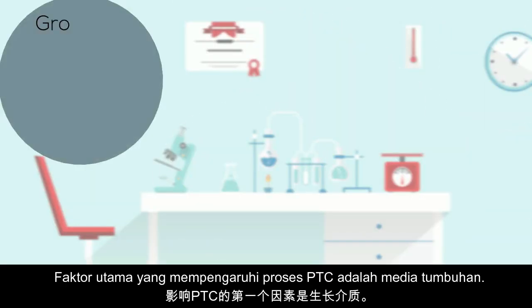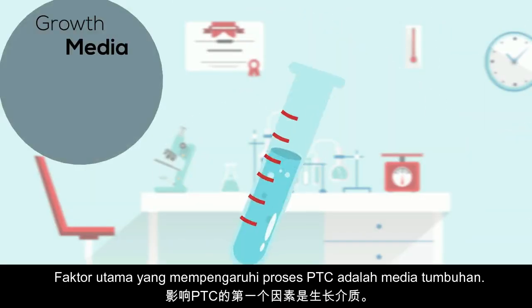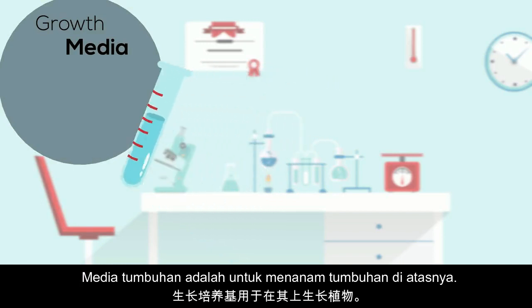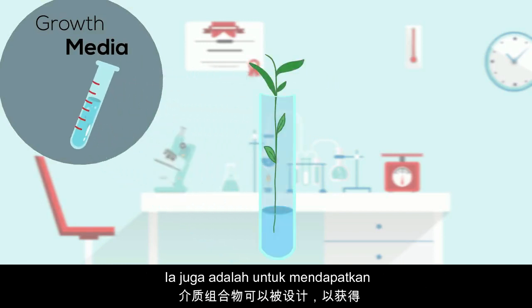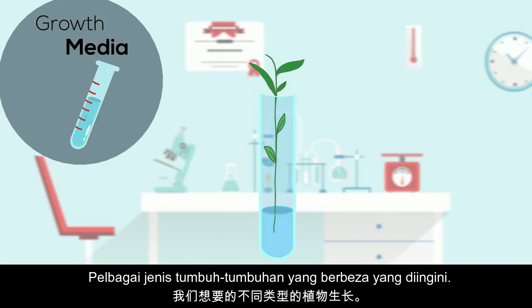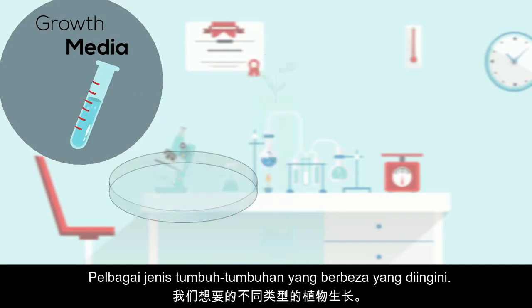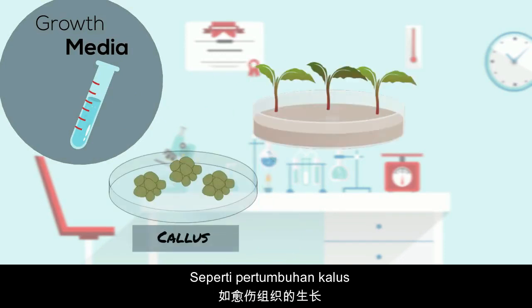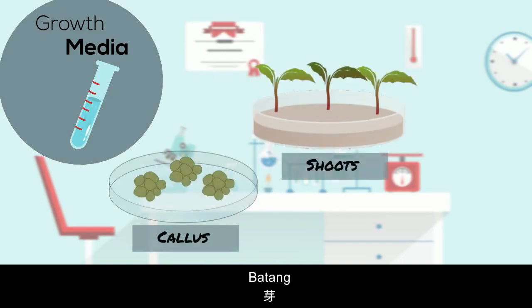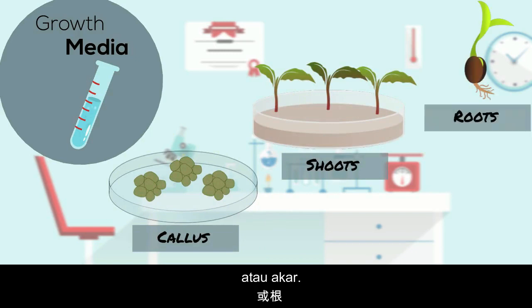The first factor that affects PTC is growth media. Growth media are used to grow the plants on. The medium composition can be designed to obtain different types of plant growth, such as the growth of callus, shoots, or roots.